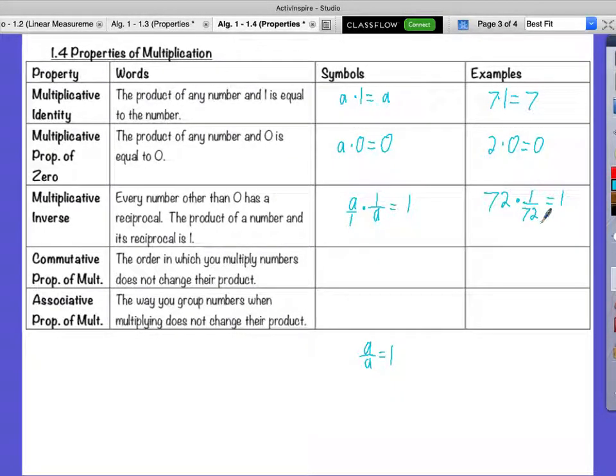The reason this works is because you have 72, which is really 72 over 1, times 1 over 72. If we multiply straight across, 72 times 1 is 72. 1 times 72 is 72. And what's 72 divided by itself? 1.